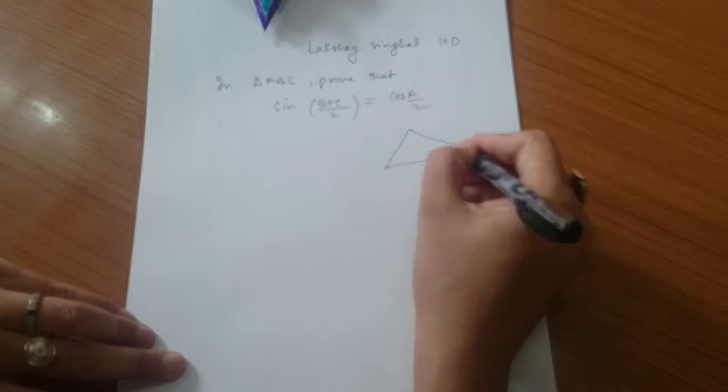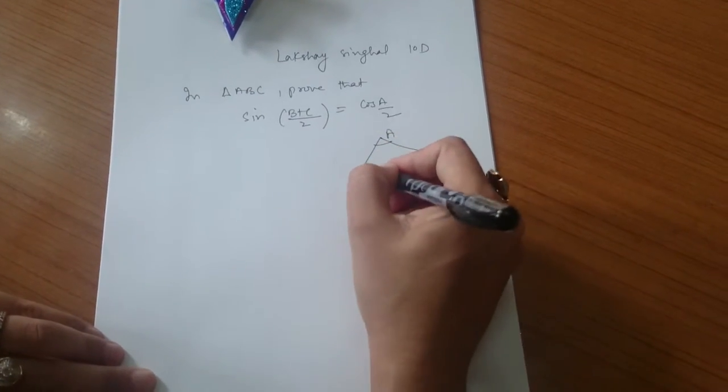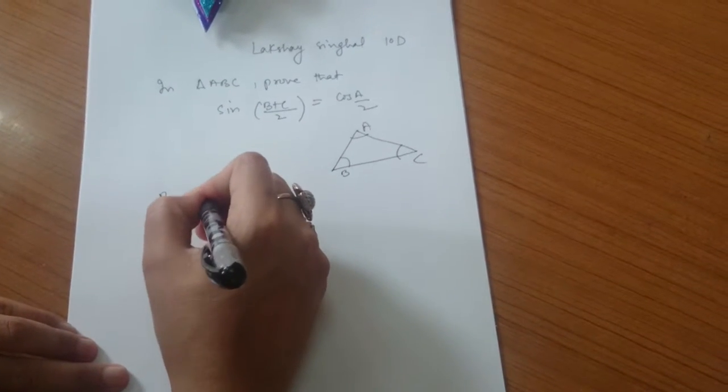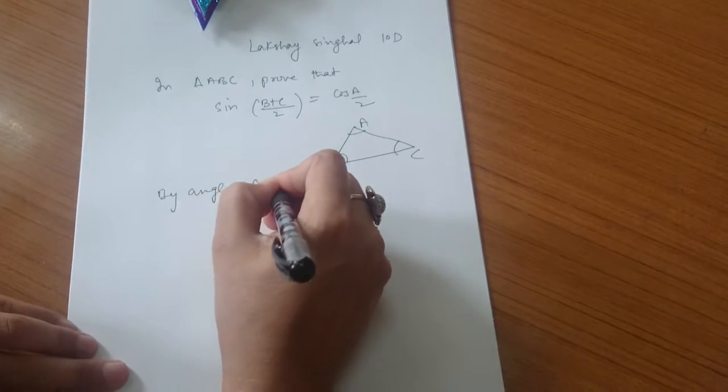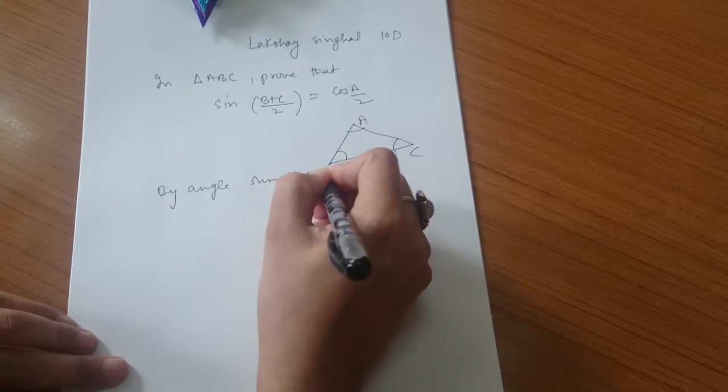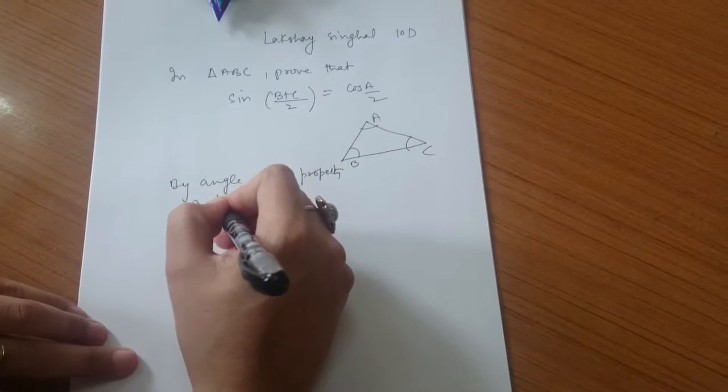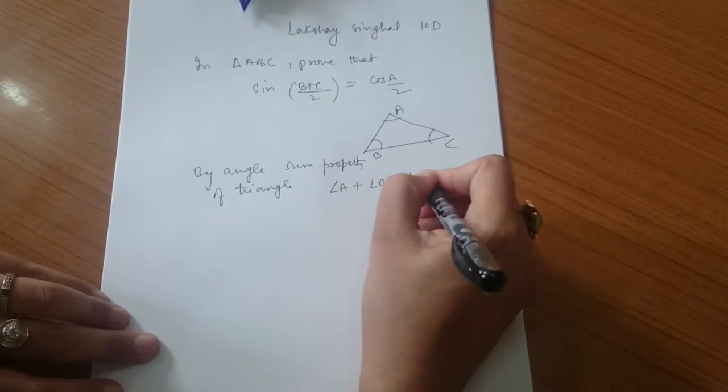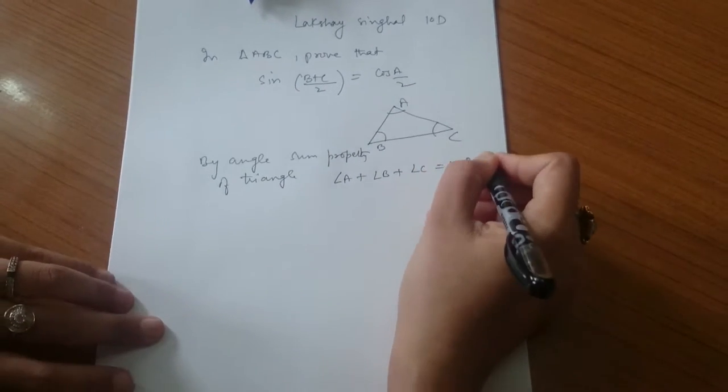If I am taking a triangle ABC, I have three angles: angle A, angle B, and angle C. By the angle sum property of triangles, angle A plus angle B plus angle C is 180 degrees.